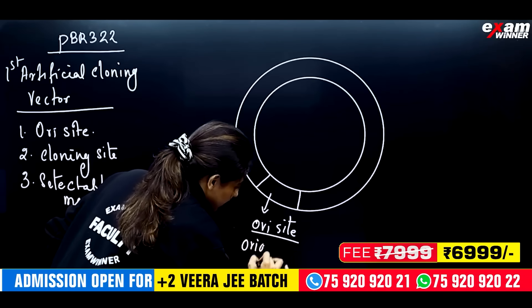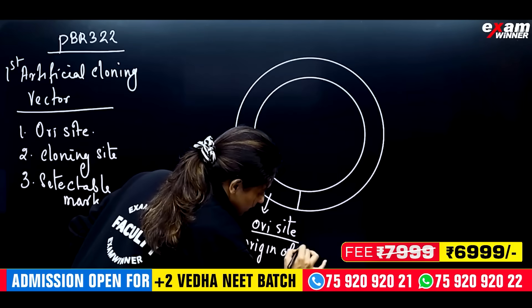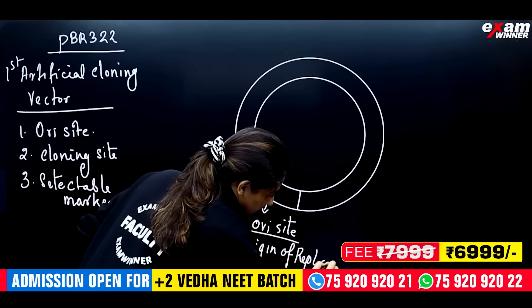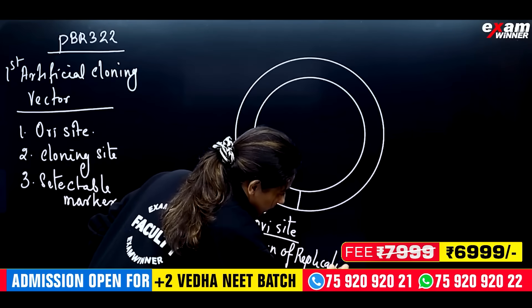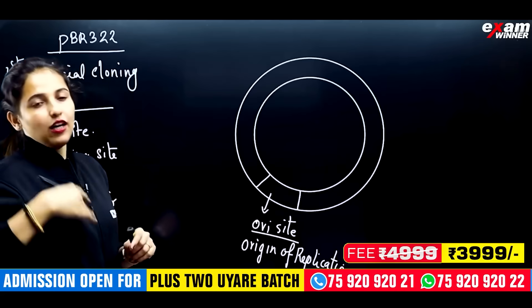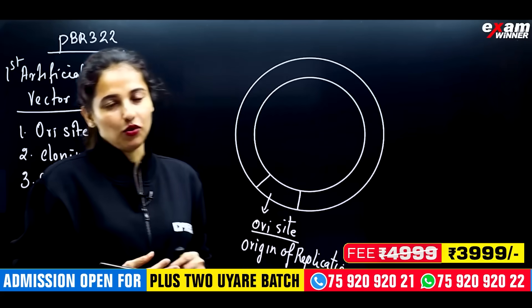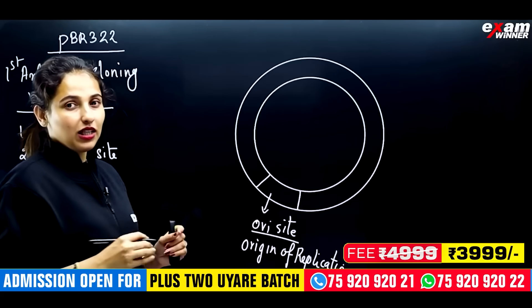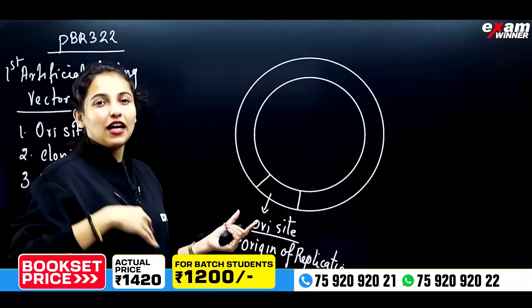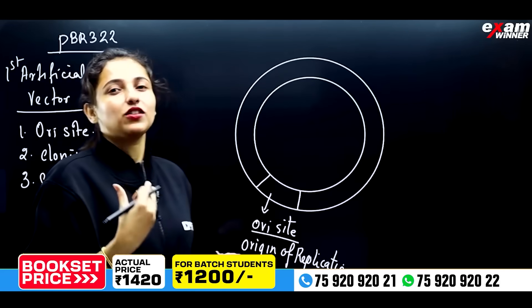The ori site means origin of replication. This is a sequence. We can insert some copies into the DNA. This sequence determines the copy number — how many copies there are. That is the ori site.